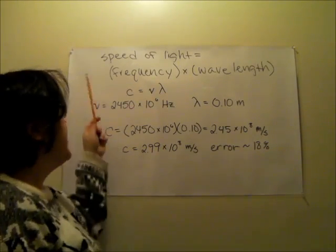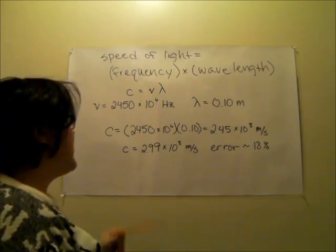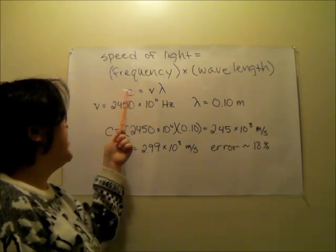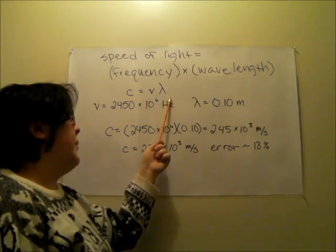So the speed of light is going to be equal to the frequency of that light times the wavelength of that light. In physics we write this as C, which is the speed of light, equals nu, which is frequency, times lambda, which is wavelength.